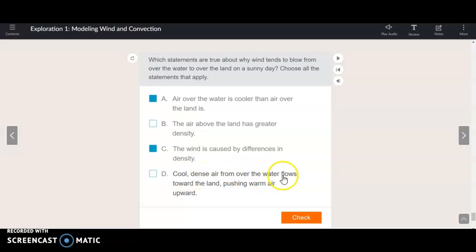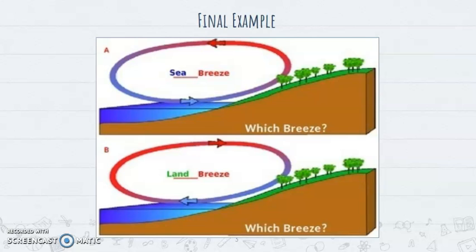Cool, dense air from over the water flows toward the land, pushing warm air upward. So, this is kind of crazy. I've got to show you this picture, guys. One moment. If you saw yesterday's slideshow, the final picture was this. It's a final example. That's why. But I threw this one in there because I noticed that we're talking about air pressure. And the way air pressure, differences in air pressure, cause wind. Let me repeat that because that's important. Differences in air pressure cause wind.